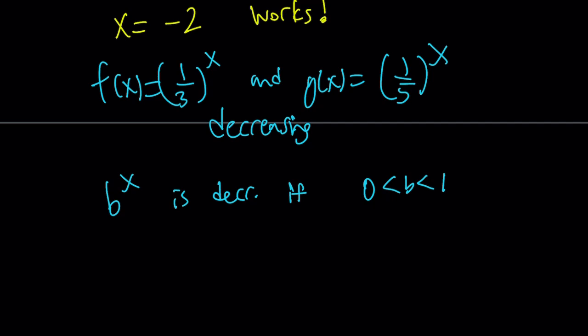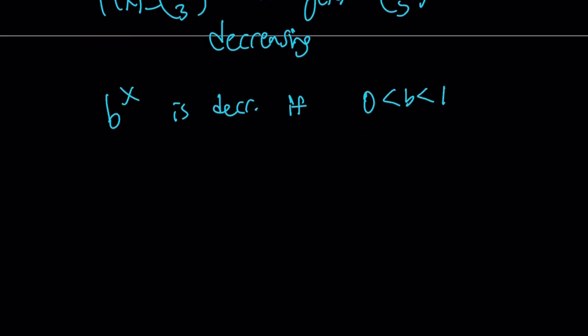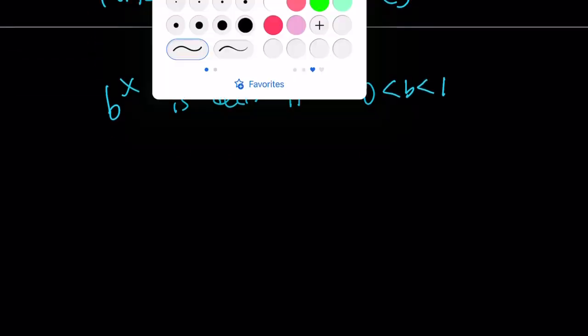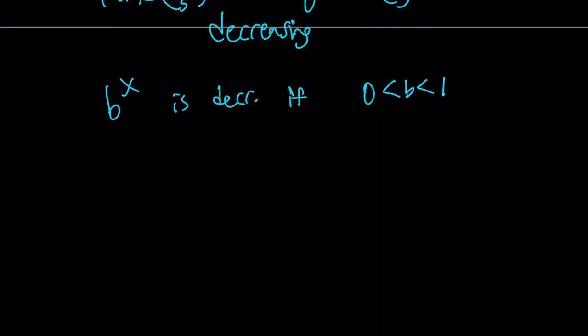So we have two decreasing functions and they're being added. So their sum is also going to be decreasing. So we can safely say that the sum of two decreasing functions is decreasing.